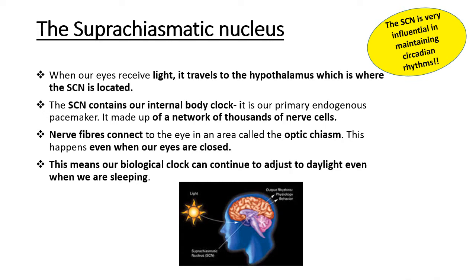We have our SCN in our hypothalamus, and the cells contain the biological clock. The nerve fibres connect to our optic chiasm, so the SCN uses information from the optic chiasm to make adjustments to our circadian clock. Even when we are asleep and our eyes are closed, we are still able to receive information from our environment so that we can manage and maintain our circadian rhythms.